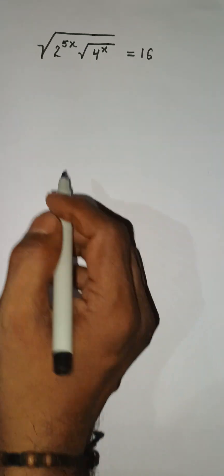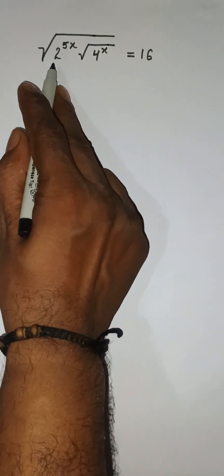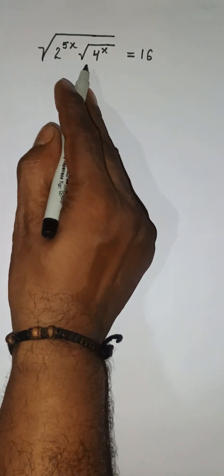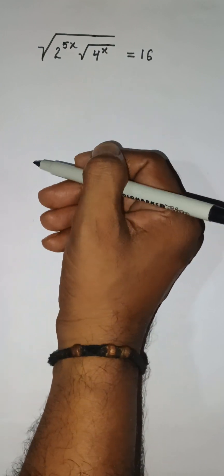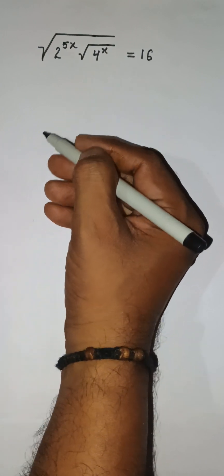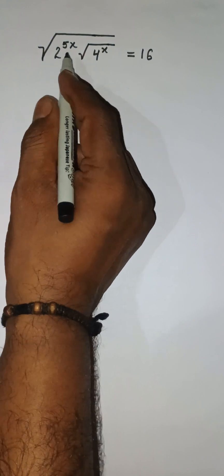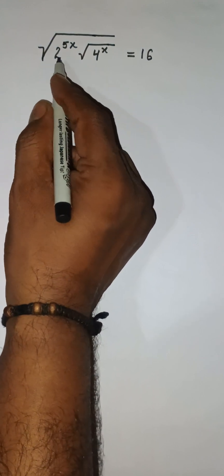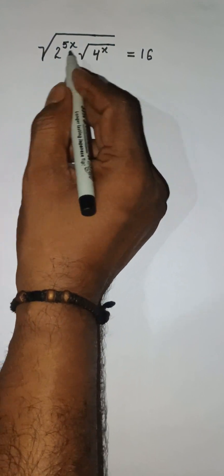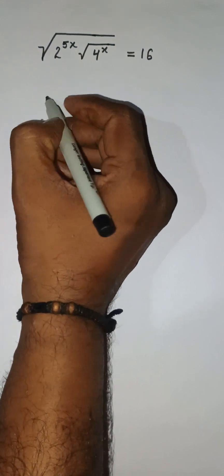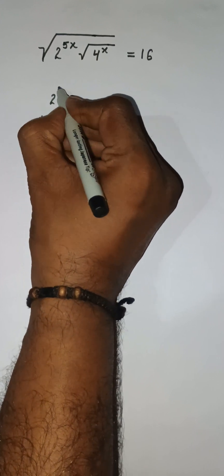Hello everyone, let's solve this problem: root under 2 to the power 5x, multiplied by root under 4x, is equal to 16. Let's solve this one within 10 seconds. Here we have 2 to the power 5x written in this form.